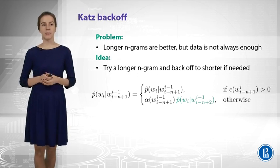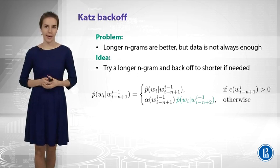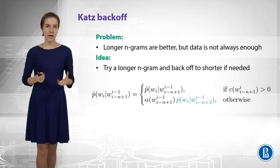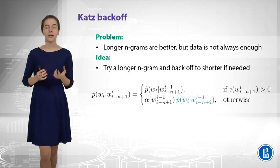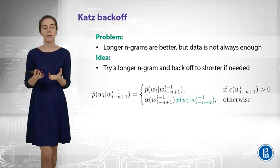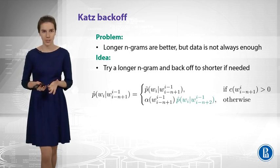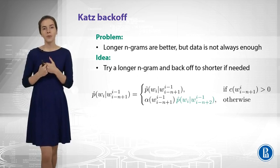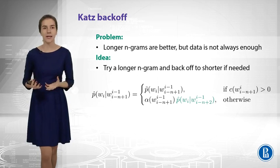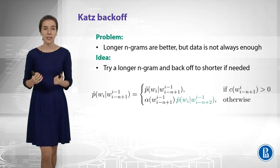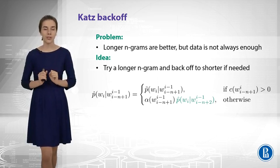Let us try to see something more complicated. Sometimes we would like to use longer n-grams — it would be nice to use them, but we might not have enough data to do this. So the idea is: what if we try to use longer n-grams first, and then, if we don't have enough data to estimate the counts for them, we become not that greedy and go for shorter n-grams.